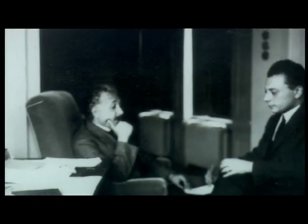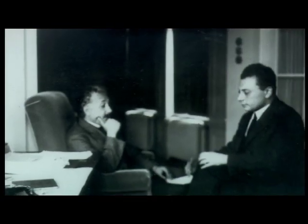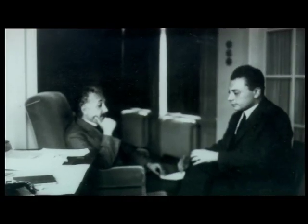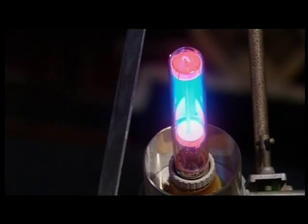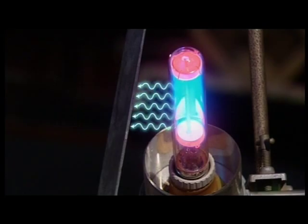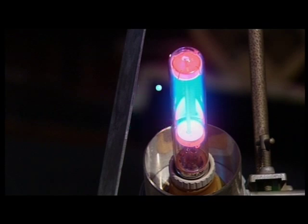Einstein's explanation of the photoelectric effect presented a new challenge to scientists. Up until this time, they had explained the properties of light in terms of waves. Suddenly, it seemed that light could also behave like particles. How could this be?